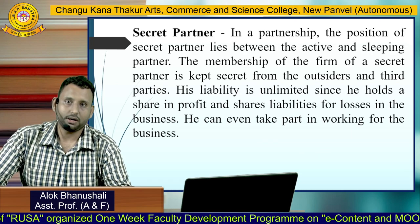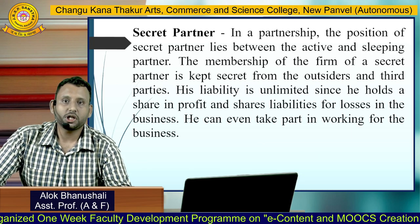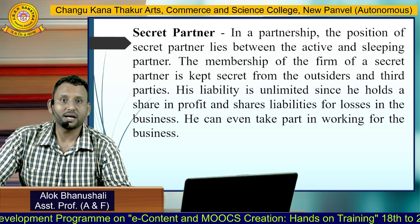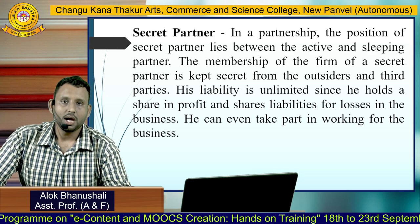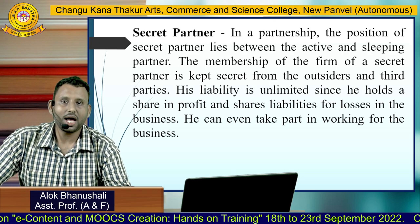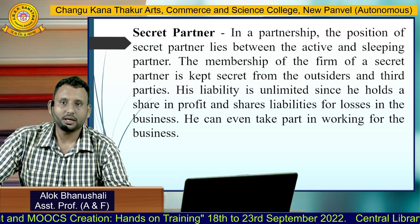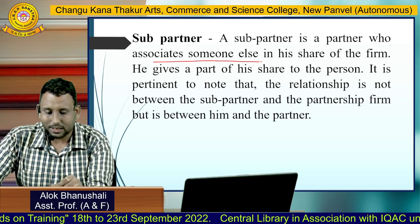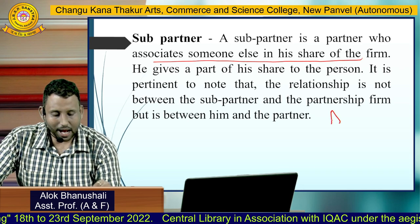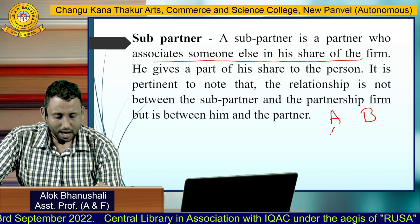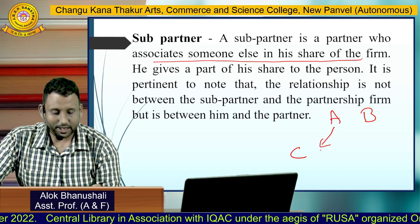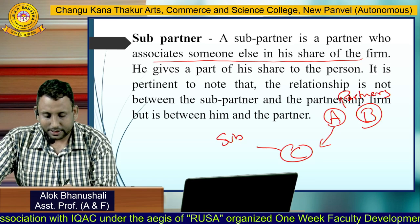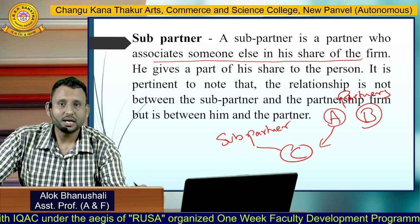In a partnership, the position of a secret partner lies between an active and a sleeping partner. The membership of a secret partner is kept secret from outsiders and third parties. His liability is unlimited since he holds a share in the profit and shares liabilities for losses. A subpartner is a partner who associates someone else in his share of the firm. For example, if A and B are partners and A shares his profit with C, then C is the subpartner.